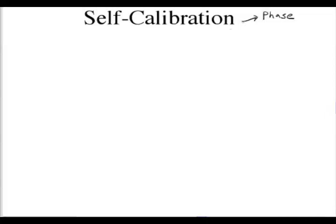There are basically two different types of self-calibration: self-calibrating phase and self-calibrating gain. We'll talk about each of these in turn. But first, let's talk about the principle of self-calibration. Suppose we had four antennas labeled 0, 1, 2, and 3.